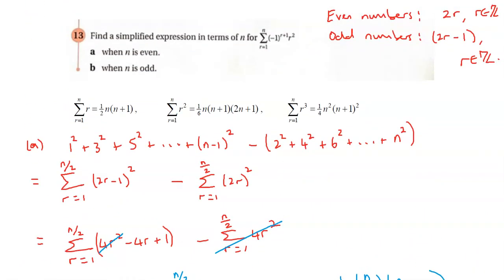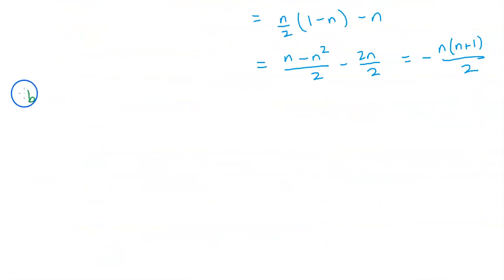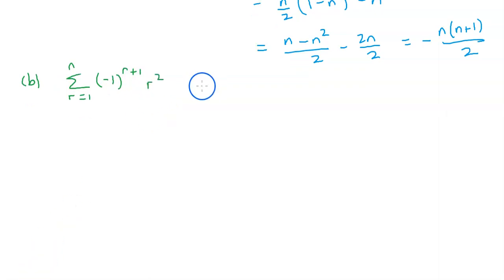So that takes care of part A when n is even. Now part B, when n is odd. It is the sum from r equals 1 to n of negative 1 to the power of r plus 1 times r squared. And this time n is odd.